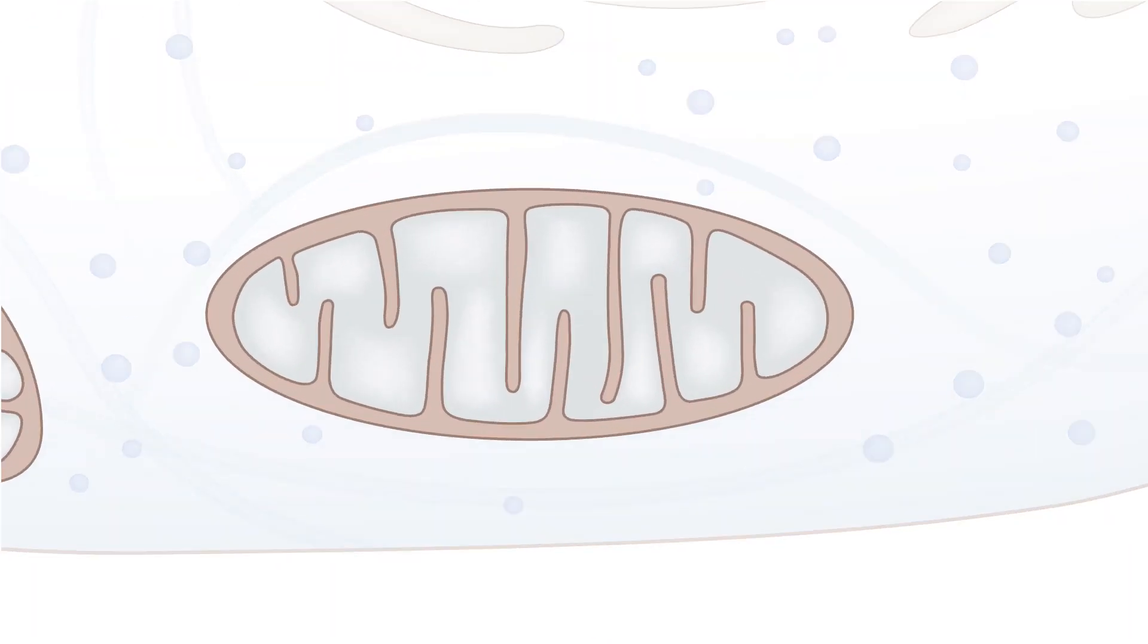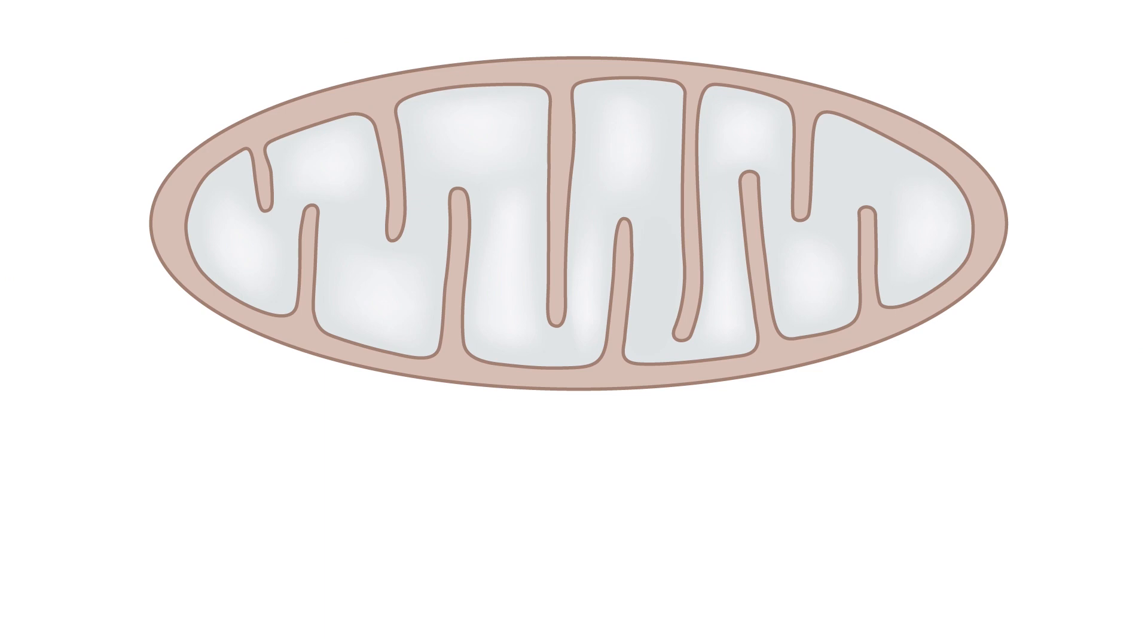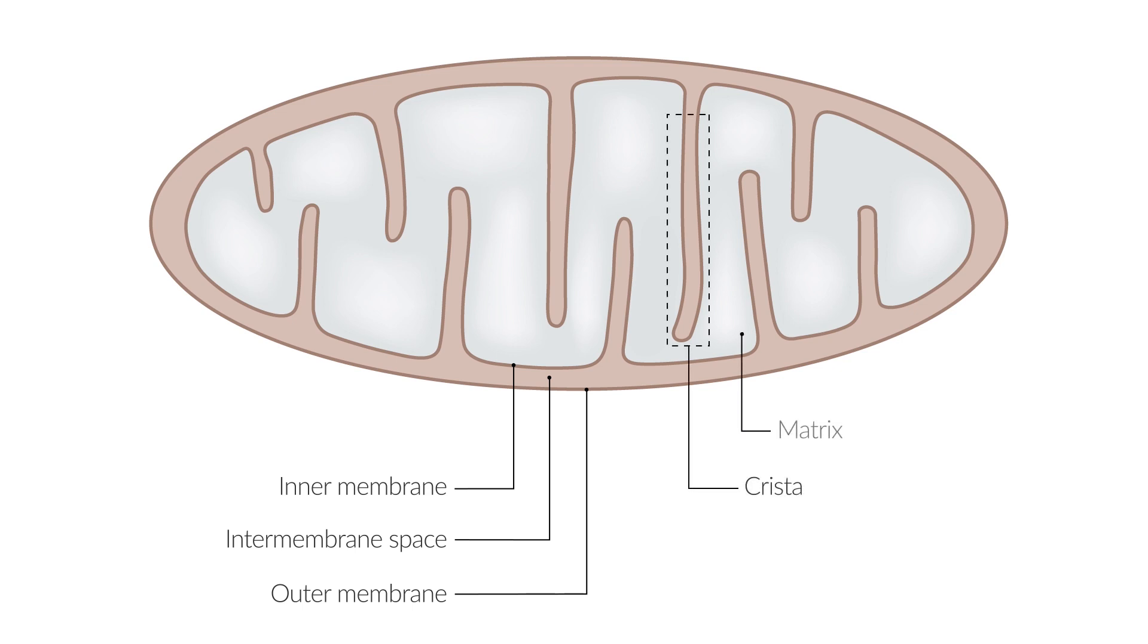A notable feature of the mitochondrion is the double membrane surrounding it. It comprises an inner and outer membrane, with an intramembranous space located between both. Characteristically, the inner membrane has several folds, mainly cristae, protruding inward into the innermost space, the mitochondrial matrix.